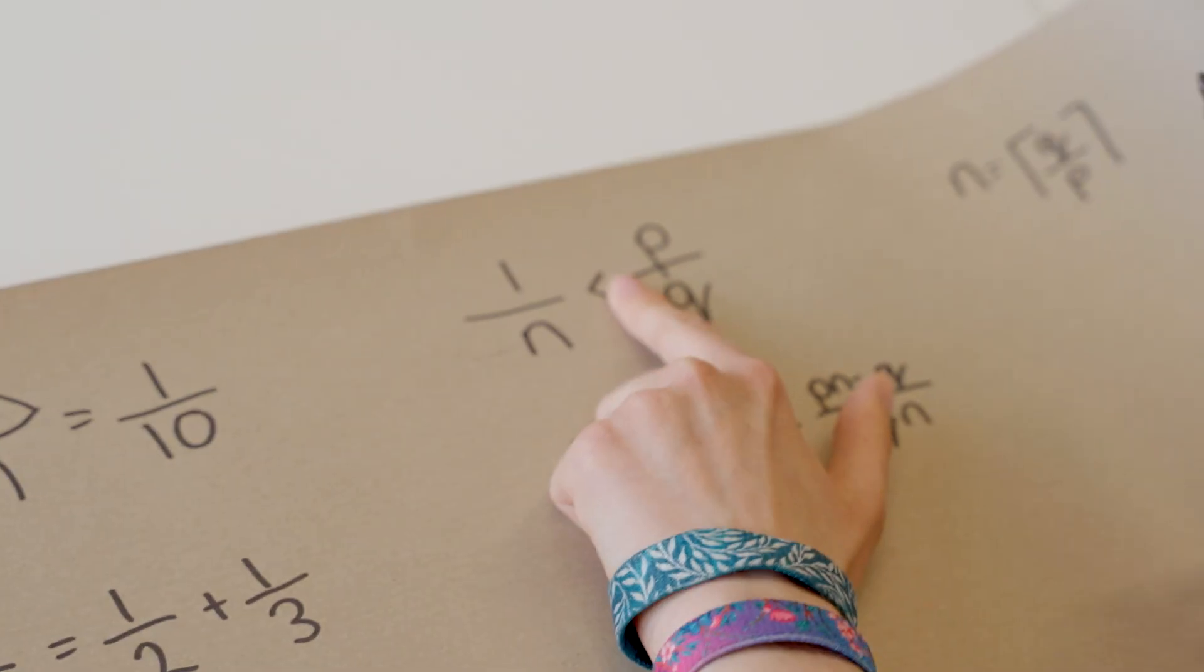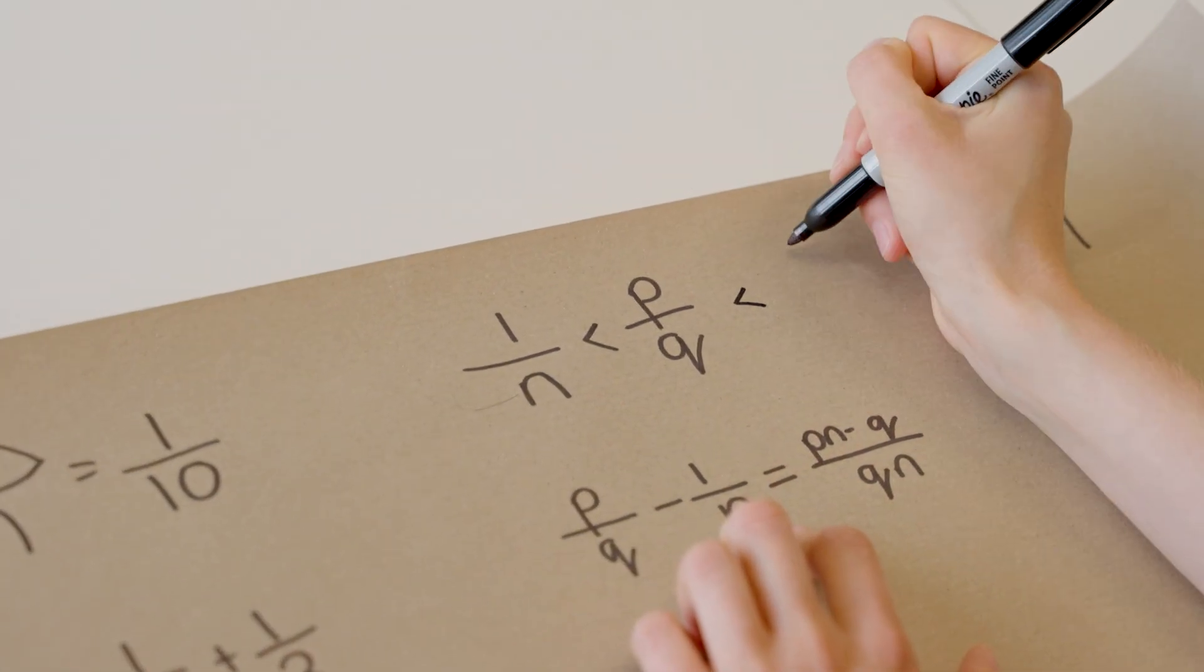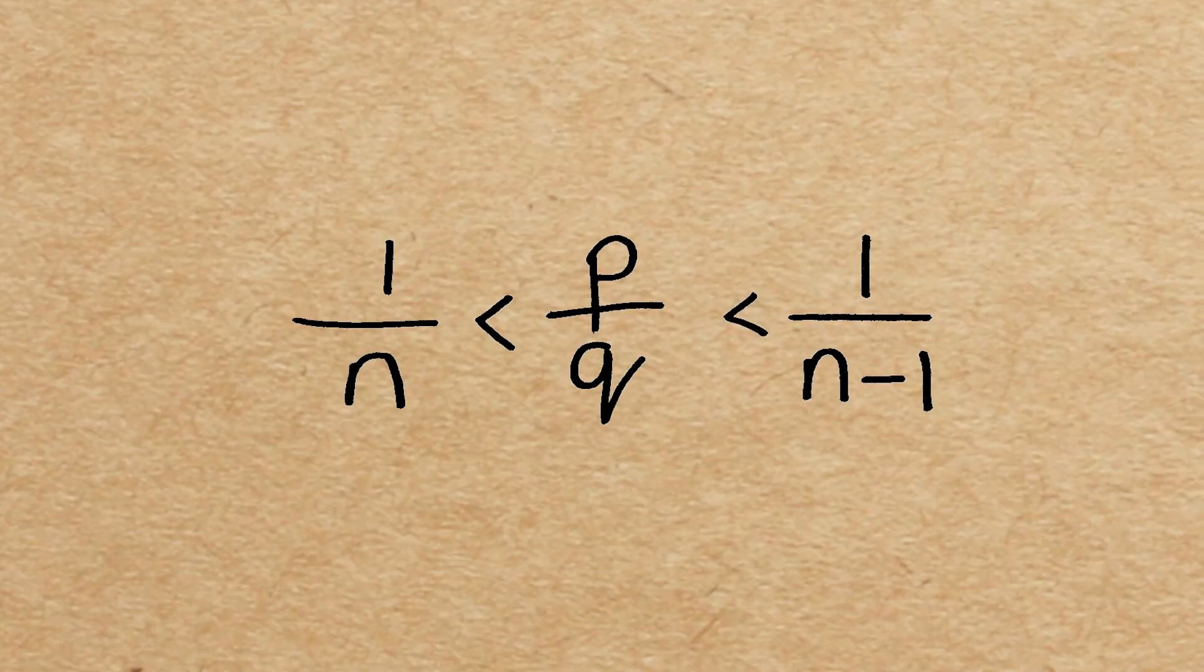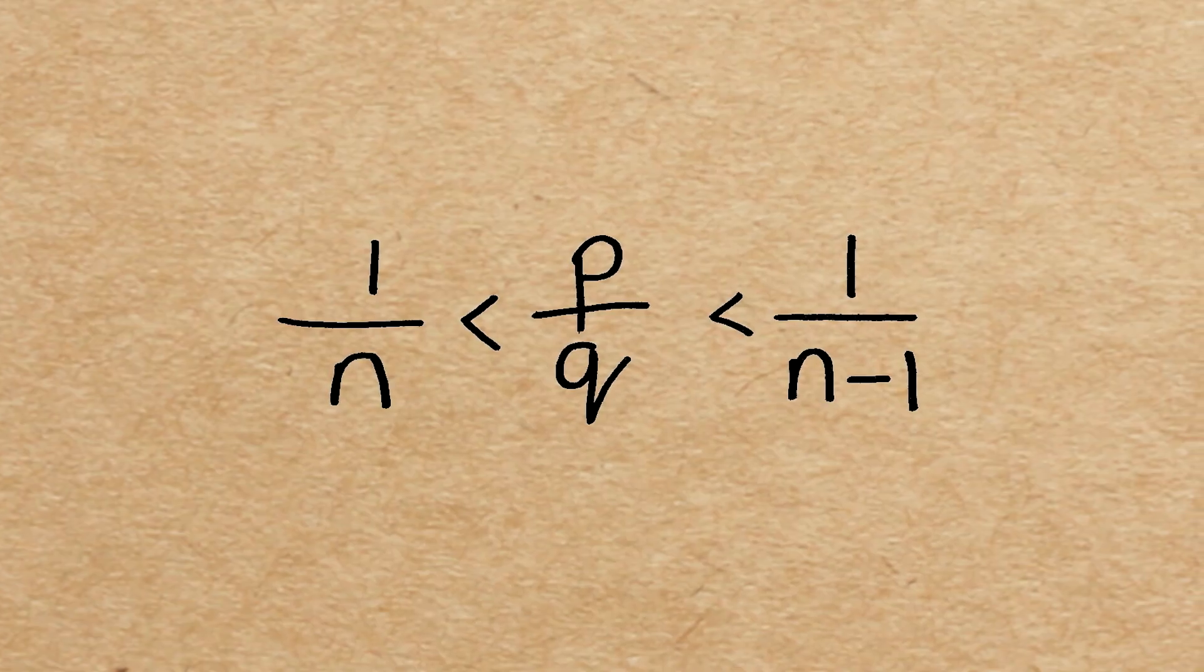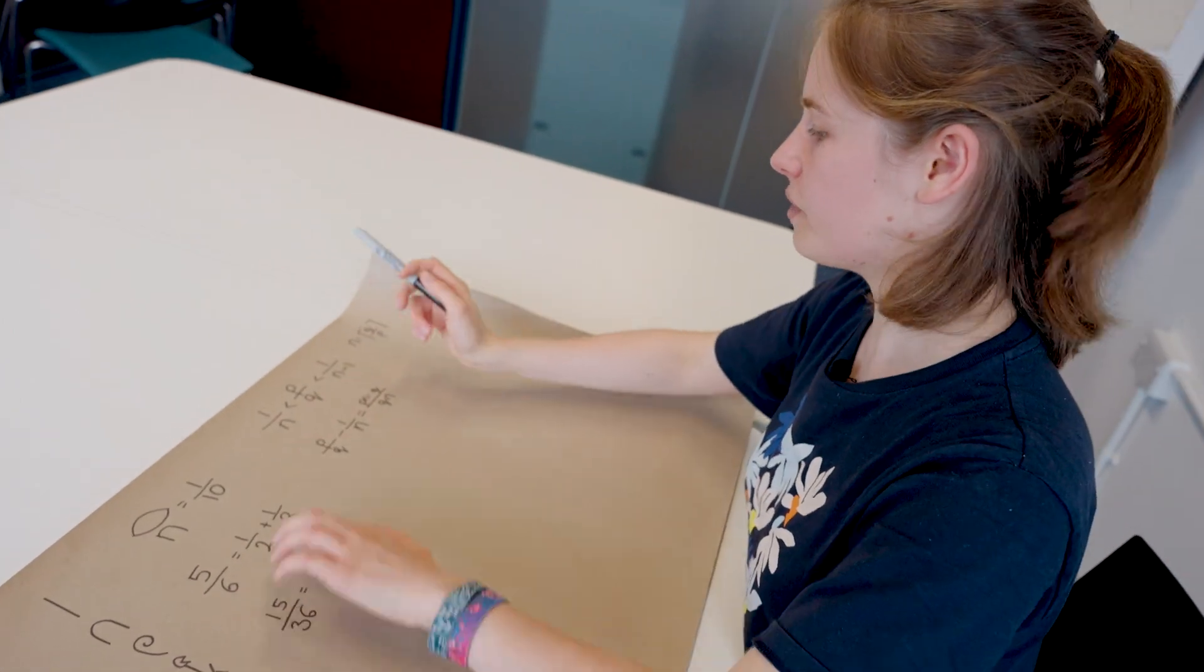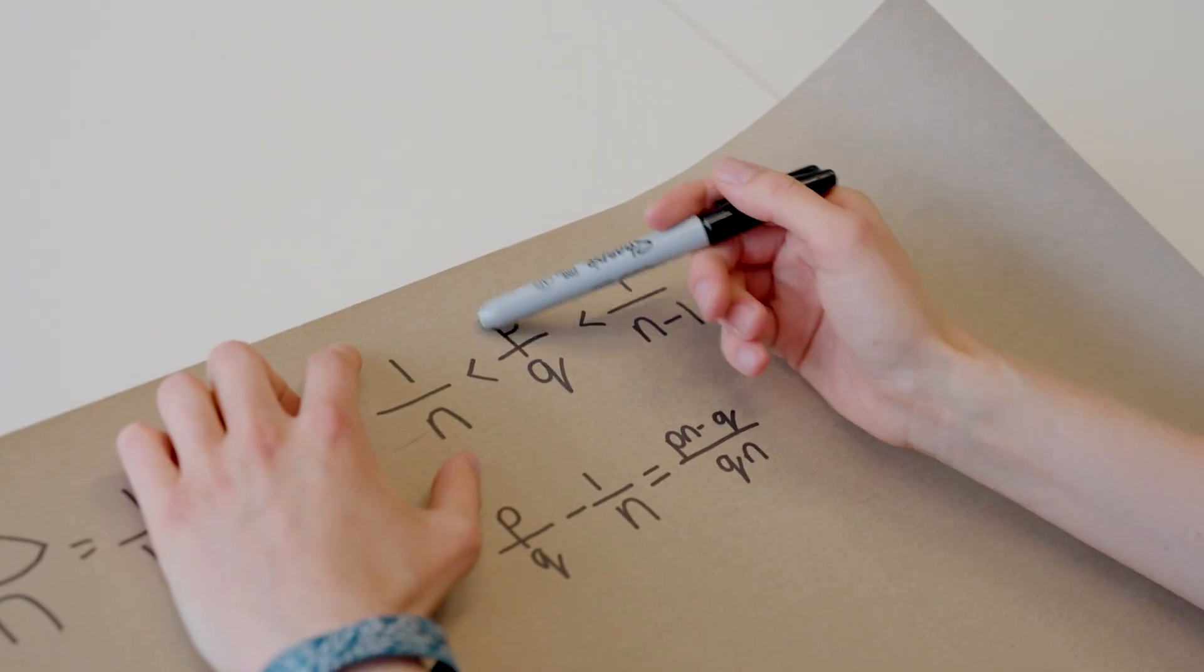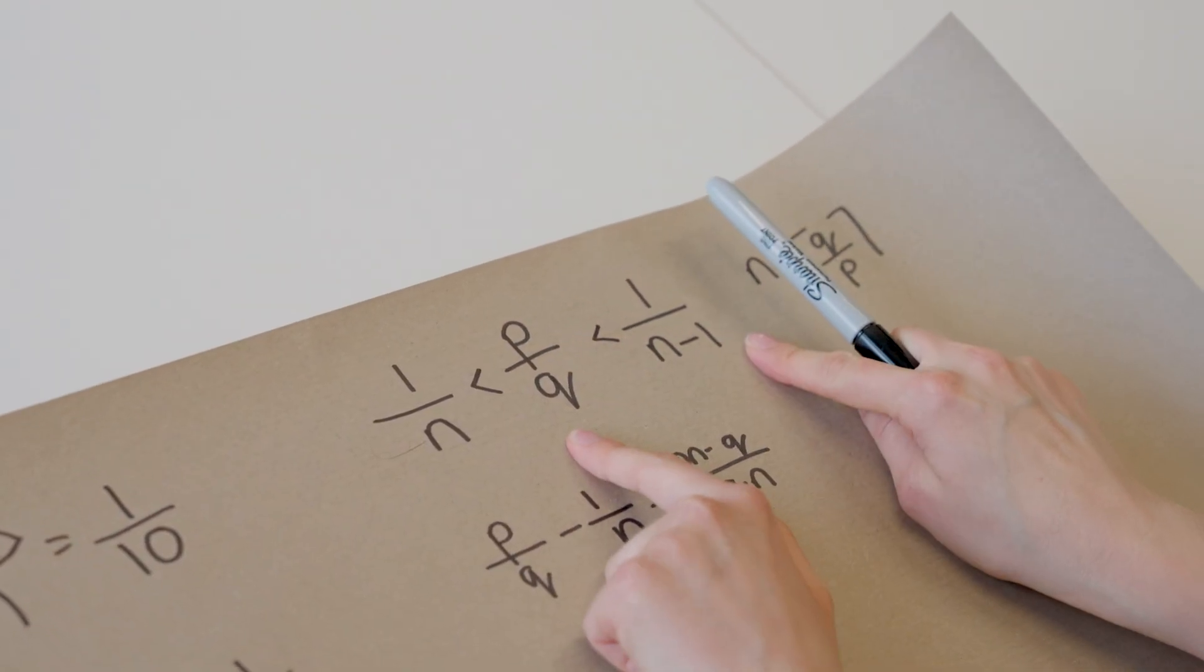We haven't actually used the fact that one over n is the greatest for which this is true, because what this means is that p over q is also going to be less than one over n minus one. So we've said that this is going to be the smallest such n, or the largest such one over n, they're the same thing, that's less than this. Hence we have this inequality too.